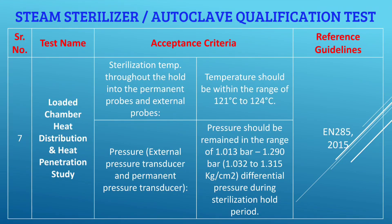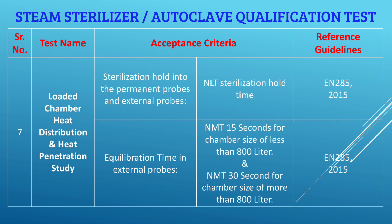For the loaded chamber heat distribution and heat penetration studies, the sterilization temperature throughout the hold in permanent probes and external probes should be 121°C to 124°C — a +3°C band — as given in EN 285:2015. Pressure from external and permanent transducers should remain in the range of 1.013 bar to 1.290 bar based on developmental studies. Sterilization hold time should be not less than the hold time decided during developmental studies.